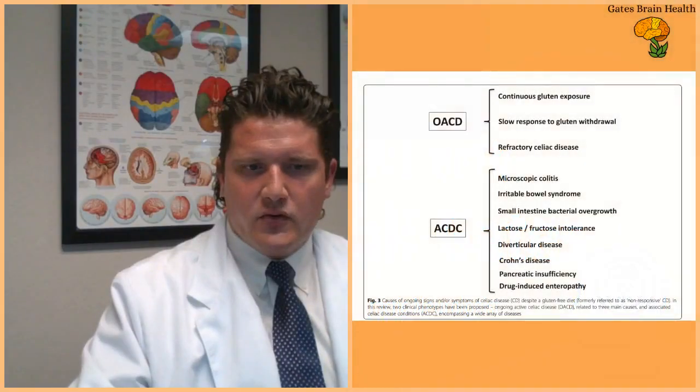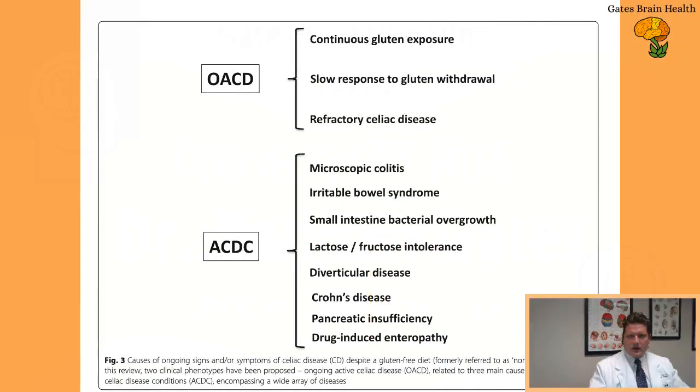If you have removed gluten and you're still having a lot of symptoms, other factors to look at would be microscopic colitis, irritable bowel syndrome, small intestinal bacterial overgrowth. I've read some studies that upwards of 37% of refractory celiac disease patients, these are celiac patients who are off of gluten and they're still not feeling well, have this overgrowth of bacteria in their small intestines.